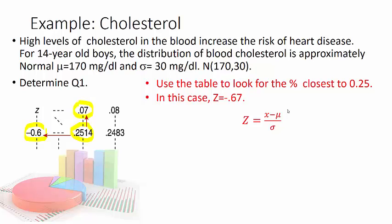Now I'm going to use the formula z equals x minus mu over sigma or z equals x minus the mean over the standard deviation. We're going to look back at these numbers the 170 and 30. There's mu and there's sigma. So put in the negative 0.67 for z, the 170 for mu and the 30 for sigma. And this is what we get. Now I don't like the 30 underneath there so I multiply both sides by 30. I get negative 20.1 equals x minus 170. Then add 170 to both sides to get 149.9. So Q1 in this case would be 149.9 milligrams per deciliter.